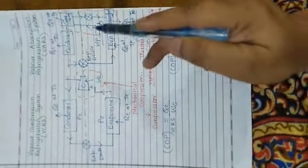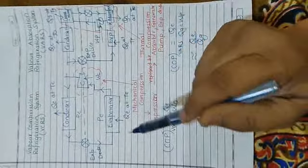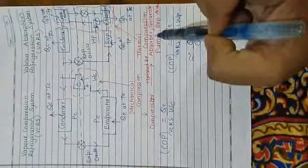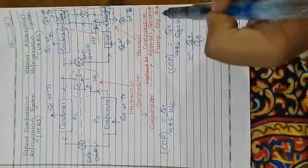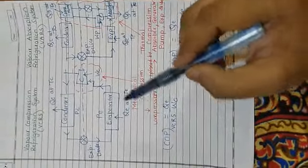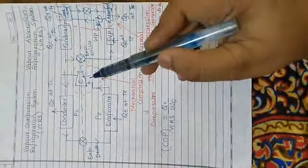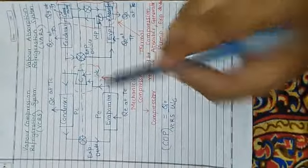So if we see the basic difference between these two systems. Here compressor is replaced by these elements: absorber, generator, pump and expansion device. Here there is mechanical compression. Here electricity is used by the compressor, which is high grade of energy.